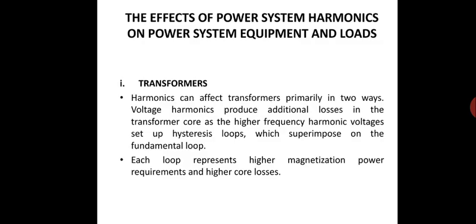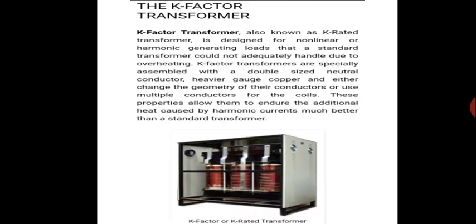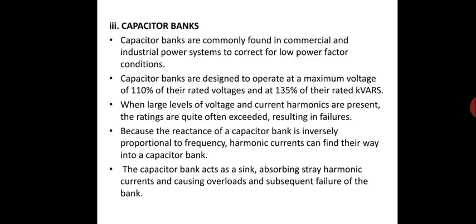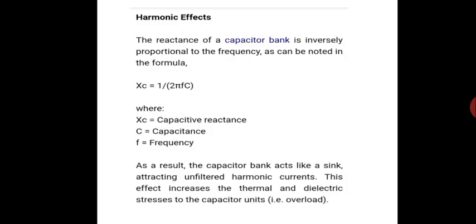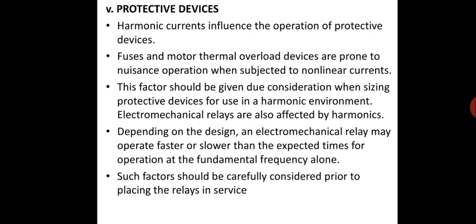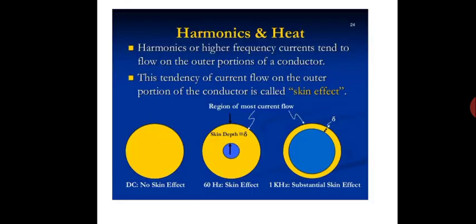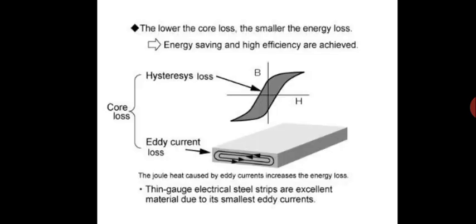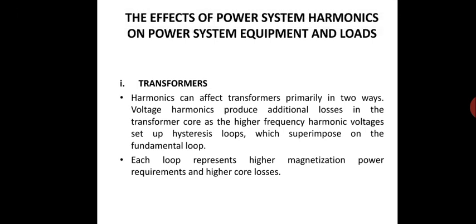Now we see the effects of power system harmonics on power system equipment and loads. First of all, we see about the transformer. Then we study about AC motors, then capacitor banks, then the harmonic effects on cables, and finally the harmonic effects on protective devices. These are all the slides which we have made for this class. Now we just see about the transformers — effects of power system harmonics on power system equipment and loads.